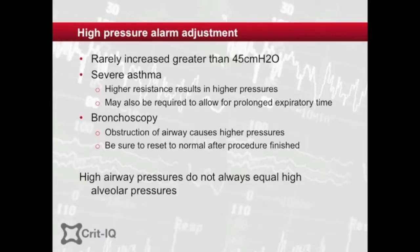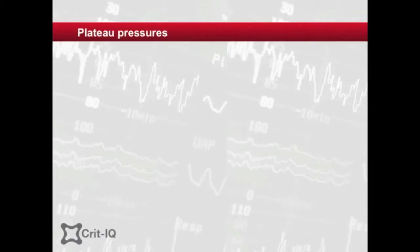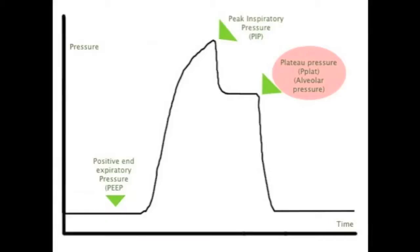It is worth noting again that high airway pressures, which are measured at the mouth, do not necessarily equate with high alveolar pressures, and the above situations are great examples of that. The extra resistance effectively dissipates the higher pressures by the time gas has flowed to the lower airways. This is not necessarily true in heterogeneous lung disease, such as chronic obstructive airways disease, where the resistance of some lung units is essentially normal and higher applied pressures will more likely affect alveolar pressure. Plateau pressure is thought to be reflective of alveolar pressure, and is always lower than PIP in volume-controlled modes, and approximately equal to inspiratory pressure in pressure-controlled modes.